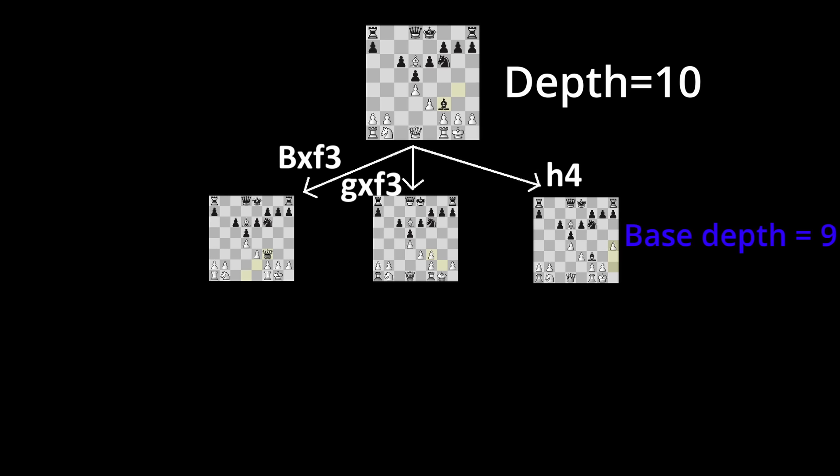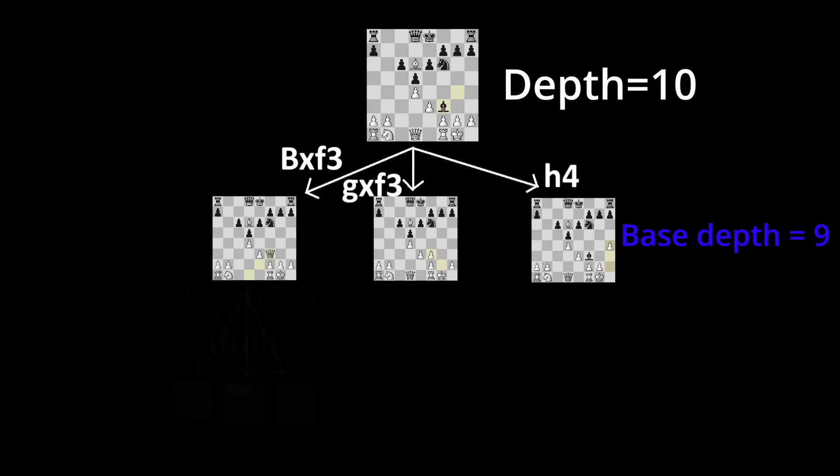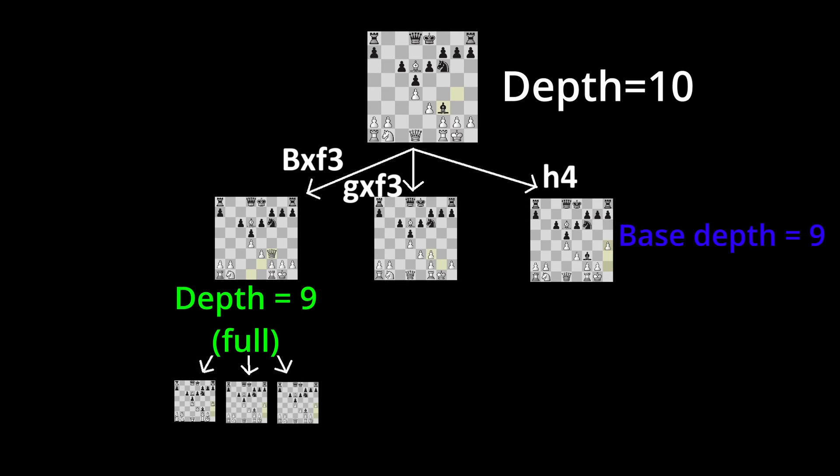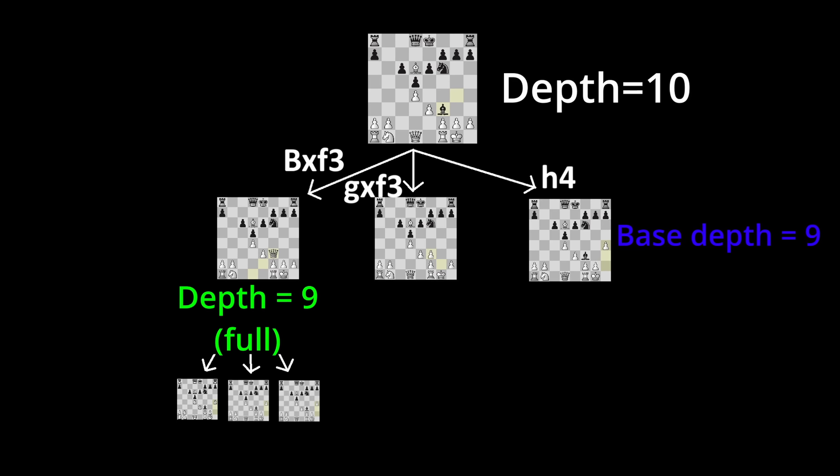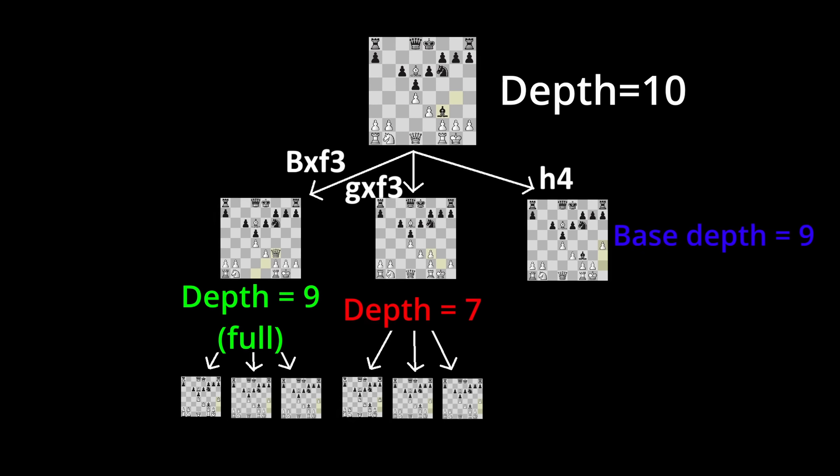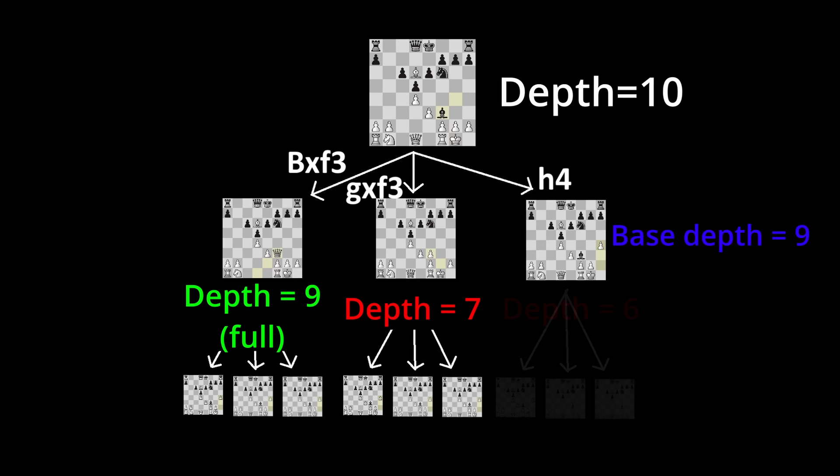Then it does a reduced search by subtracting the reduction from the depth, and if the value from the search is the best so far, then it verifies the result with a full effort search, so you reset the depth to the initial value before the reduction.